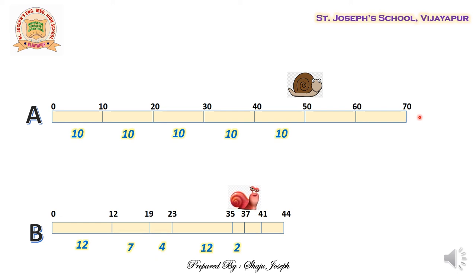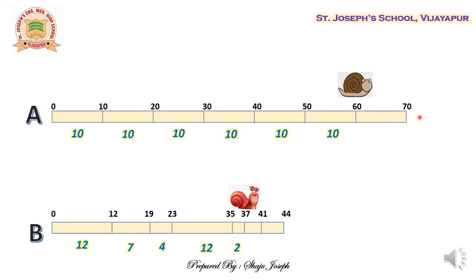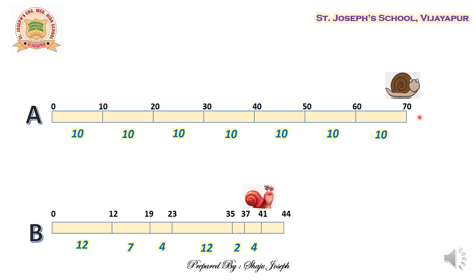We find that in case A, the distance covered has always been equal in equal time, so we can call it uniform motion. The second snail keeps changing its distance traveled in equal intervals — the interval is always 15 minutes, but the distances are all different. This is clearly observable in the diagram.